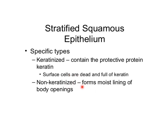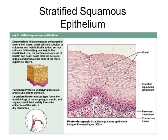The non-keratinized type of stratified epithelium forms the moist lining of body openings. The stratified squamous epithelium has a thick membrane composed of several layers. The basal layers are cuboidal and metabolically active, followed by various layers of polyhedral cells. The surface layer may be keratinized or non-keratinized, and the function is to protect the underlying tissues from abrasion.